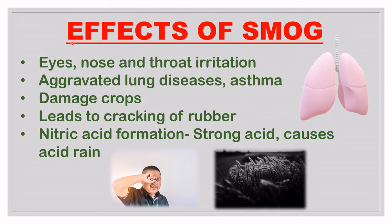The effects of both photochemical and classical smog are similar: eyes, nose, and throat irritation; aggravated lung diseases; and worsening of asthma and other existing respiratory disorders. Smog also damages crops — ground-level ozone is especially damaging, reducing agricultural yield. It causes cracking of rubber and contributes to the formation of nitric acid, which in turn causes acid rain, as NO₂ combines with water to form this strong acid.